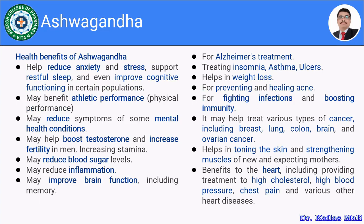Moving to the health benefits of Ashwagandha. It reduces anxiety and is mainly used to manage stress. It supports restful sleep and improves cognitive functioning in certain populations. It may benefit athletic performance. It may reduce symptoms of some mental health conditions. It boosts testosterone levels, increases fertility in men, and increases stamina. It may help control blood sugar levels, reducing it in diabetic patients.